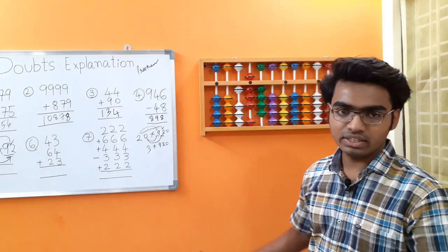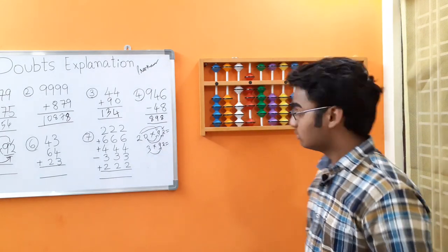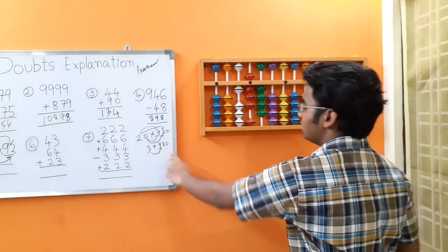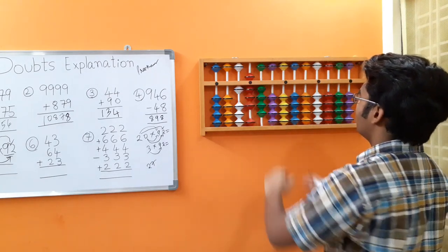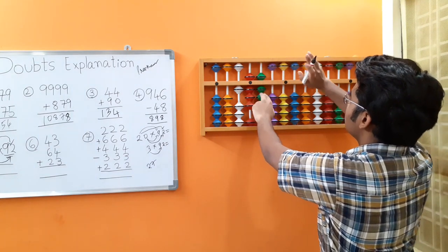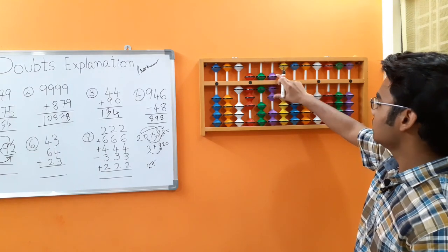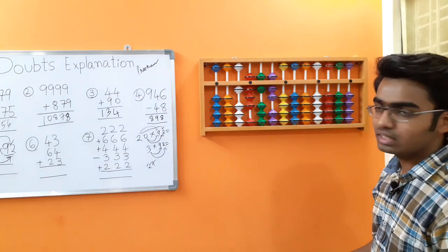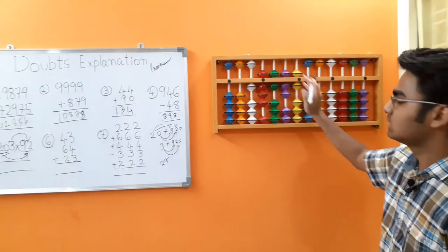Let's do the next one: 3 into 92. 3 into 9 is 27 — start placing from the hundreds rod. Add 27: use small friends concept, add the boss 5, less 2's friend 3, and place 7 on the tens rod — 7 we can add directly. Then 3 into 2 is 6 — add 6 on the units rod. We got the answer as 18676.